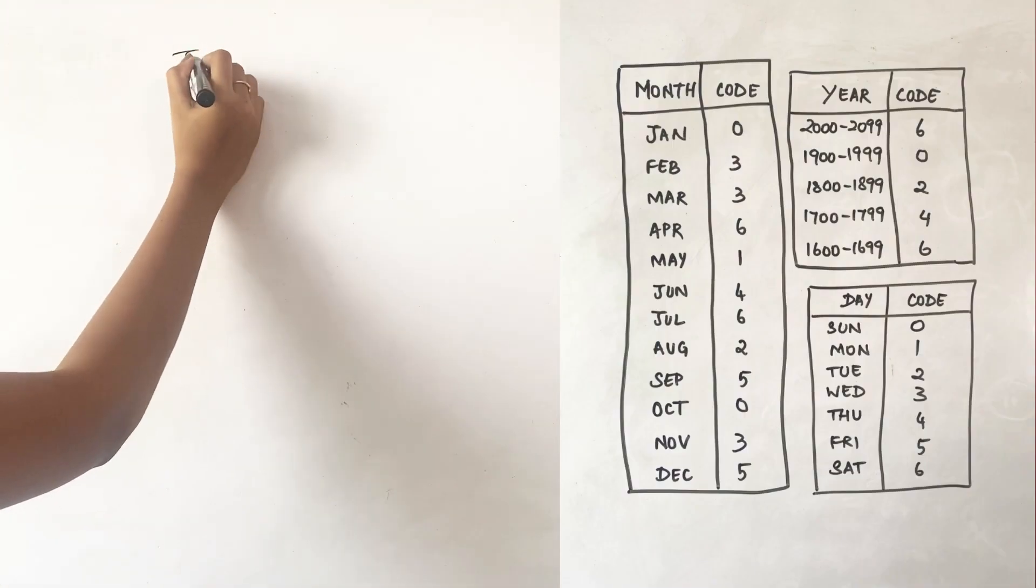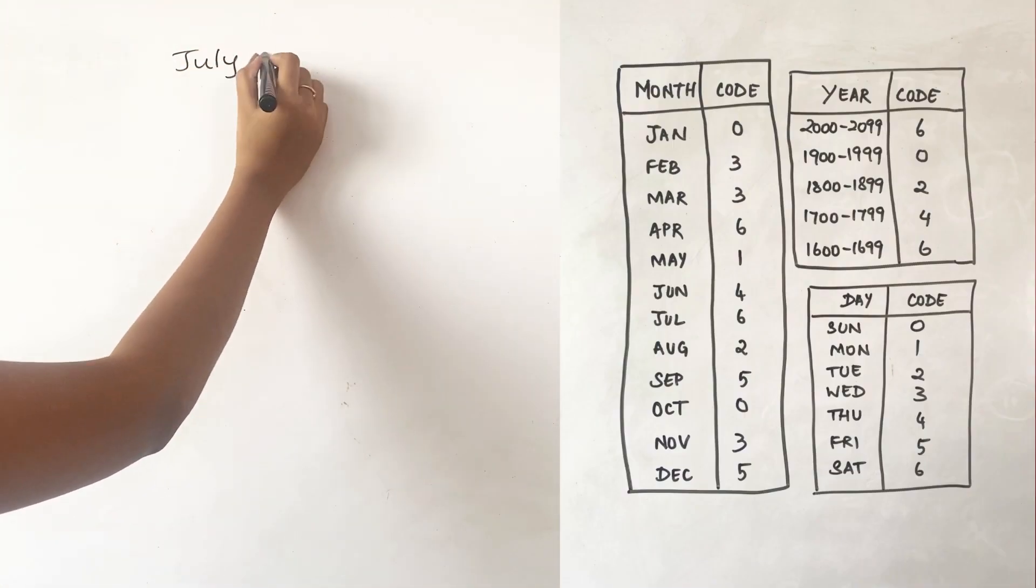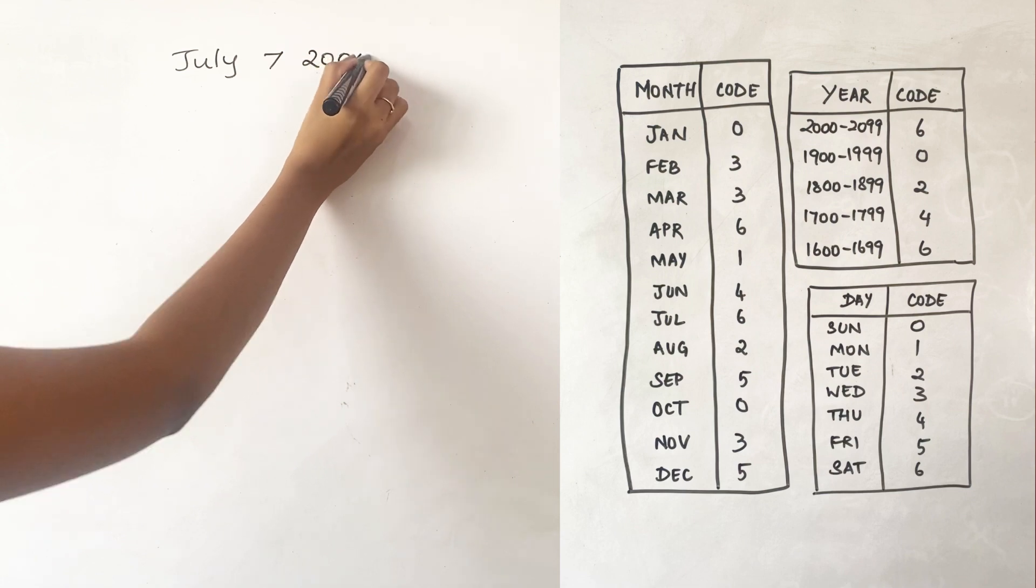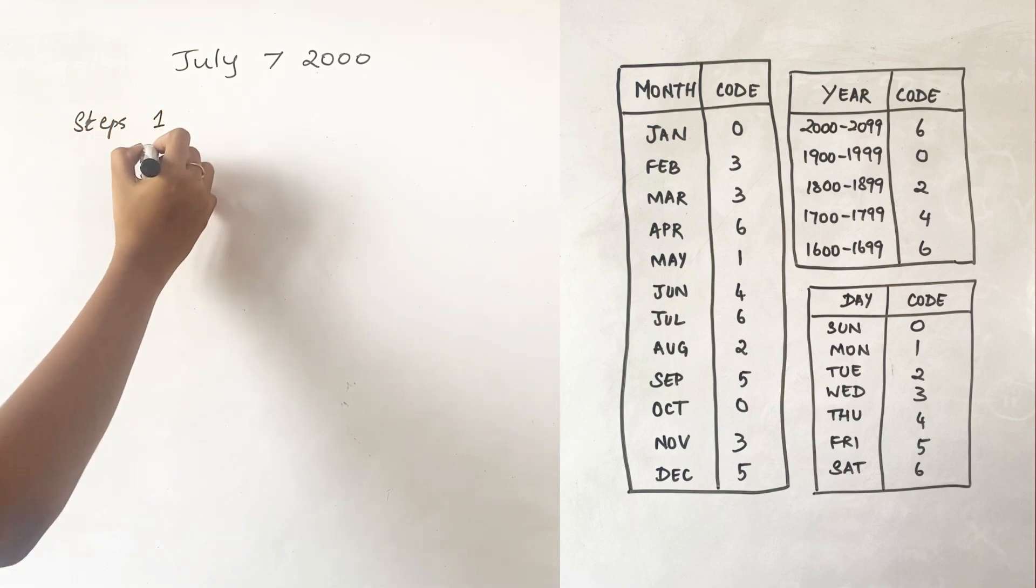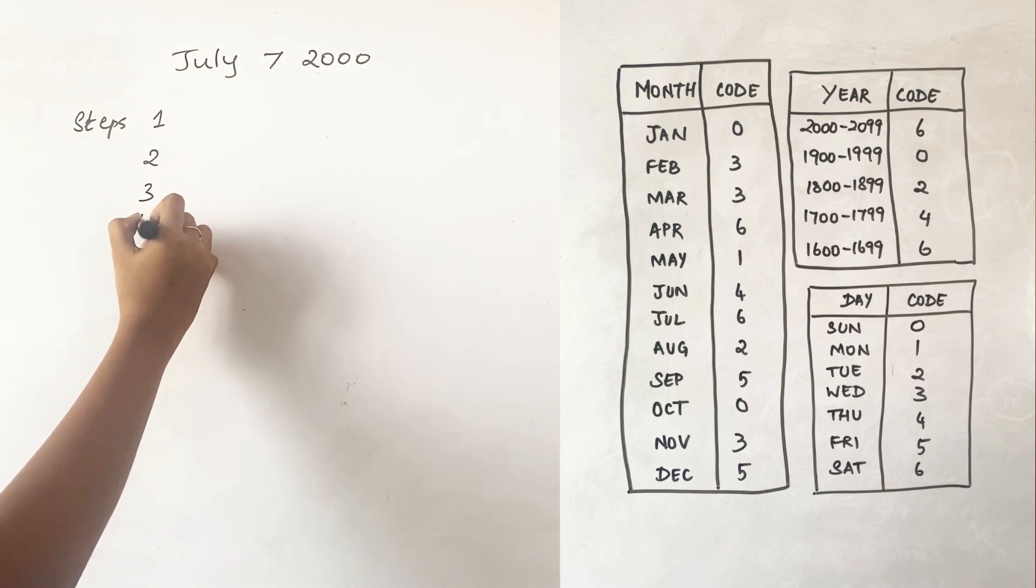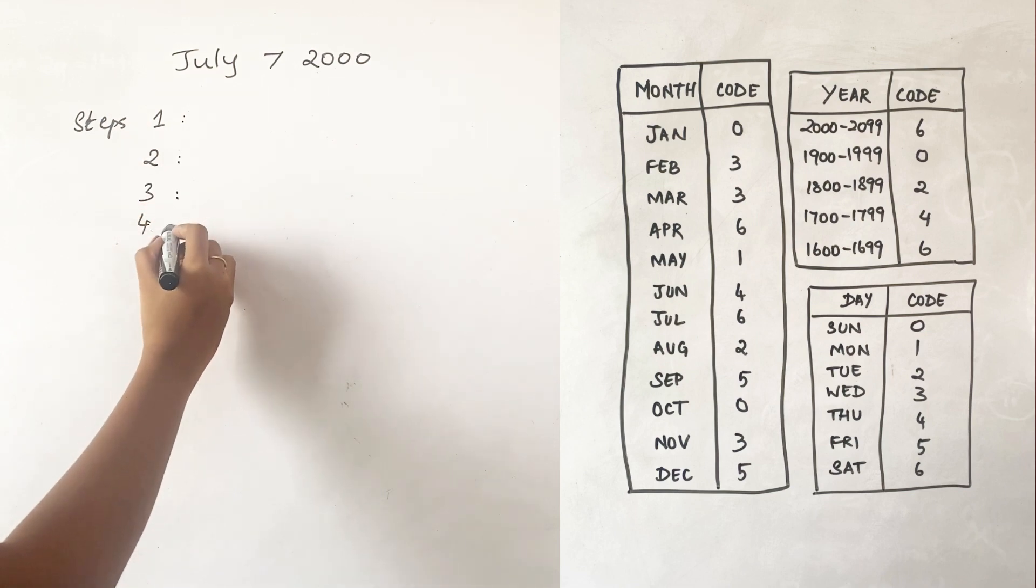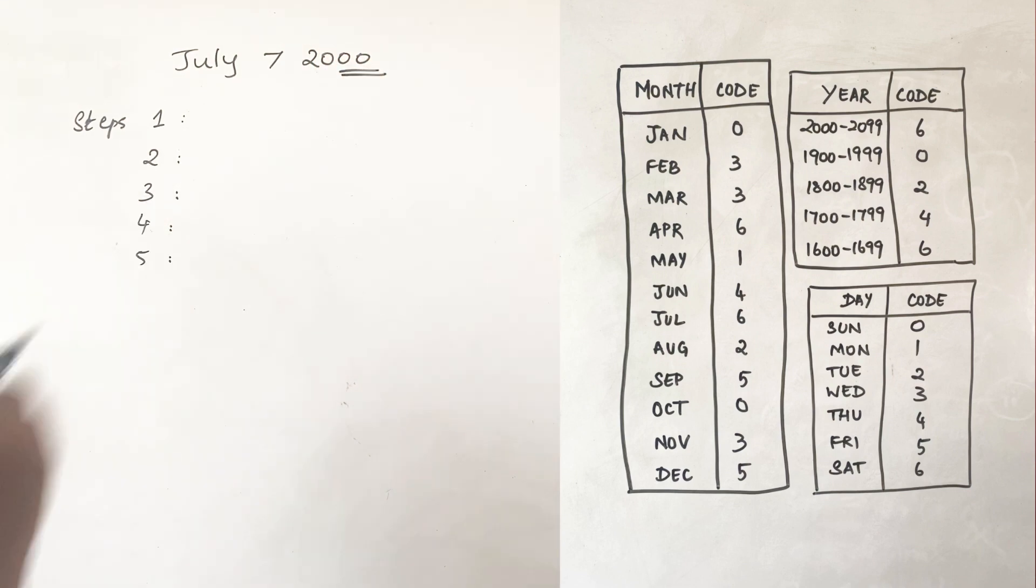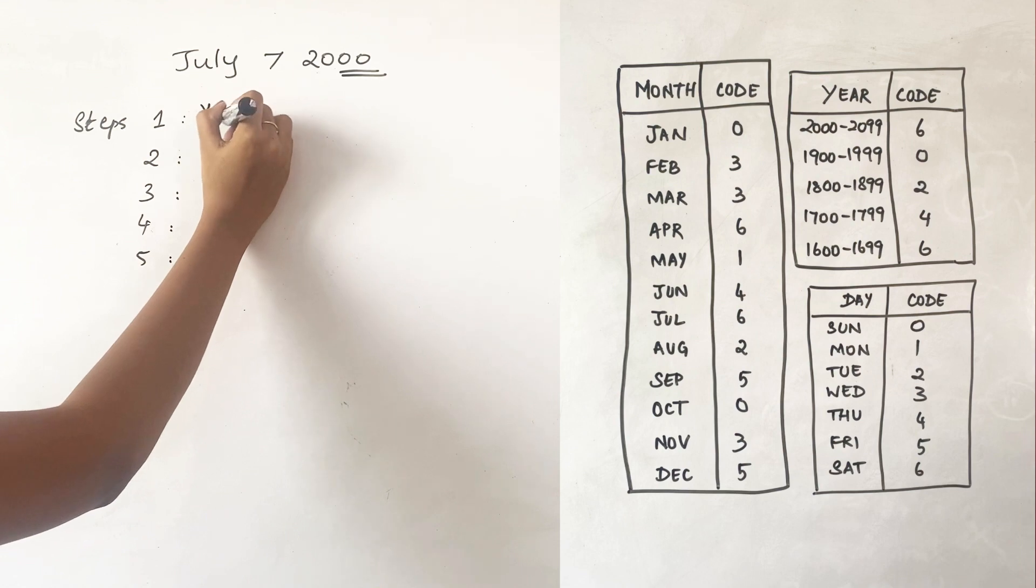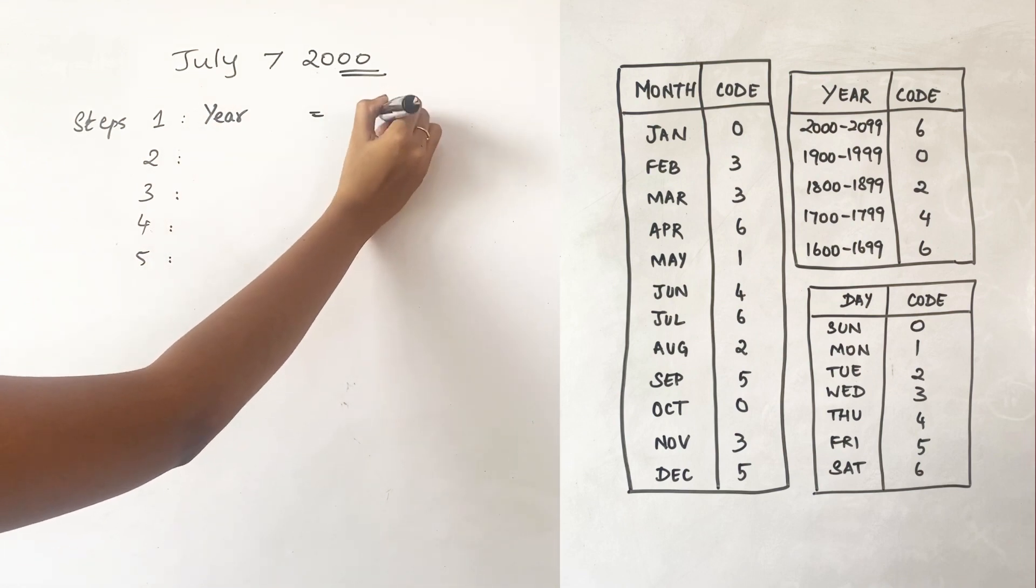Let's move on to the method now. I'm taking a random date, July 7, 2000. So there is a total of five different steps that you need to follow. Step one is to write the last two digits of the year given, only the last two digits. So here the last two digits, it's just zero zero.